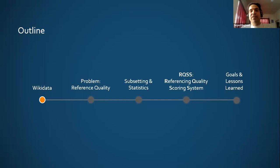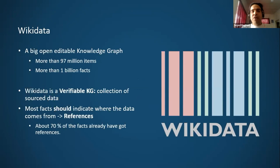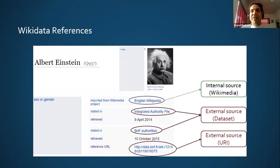As we already know, Wikidata is one of the biggest knowledge graphs in the linked data cloud. It's open for editing to anyone who wants to contribute. The unique feature of Wikidata is that you can mention the source of every single claim by something called a reference. Right now, nearly 70% of all claims in Wikidata have web references. Here we can see an example of three references in Wikidata for the sex or gender claim of Albert Einstein. The first reference points to an English Wikipedia article. The second is pointing to an external source. The third reference points specifically to the source of the fact on the web, called an external URL.